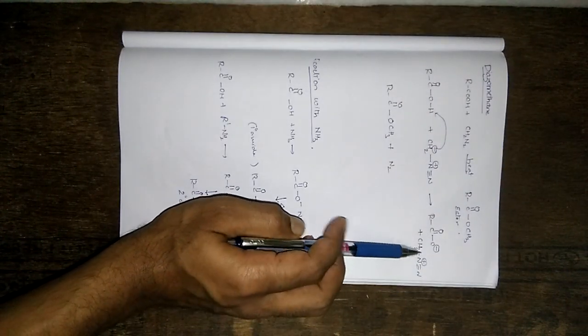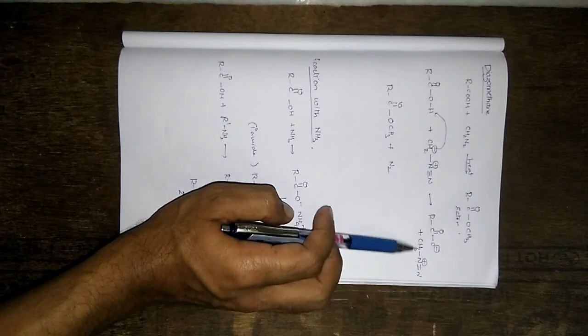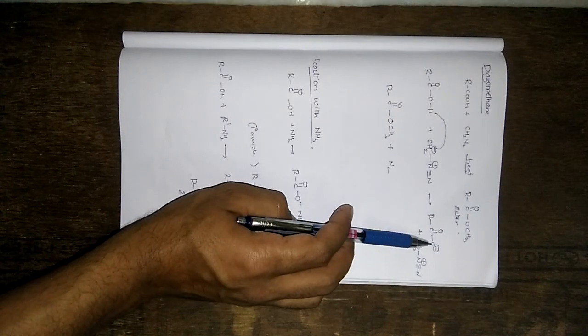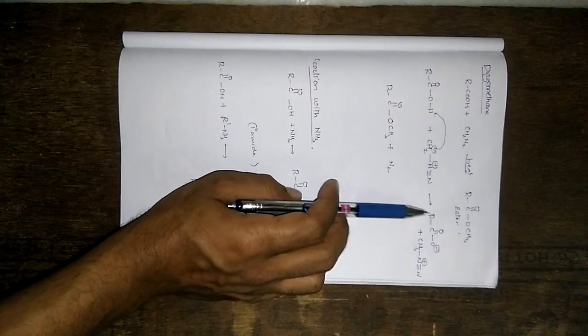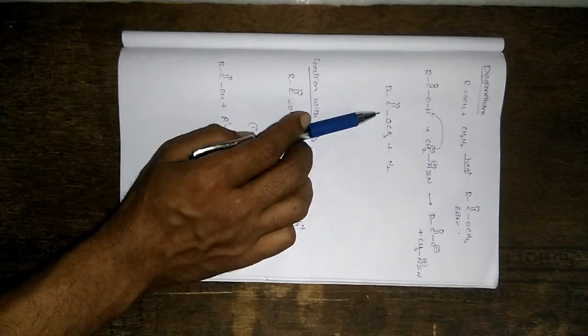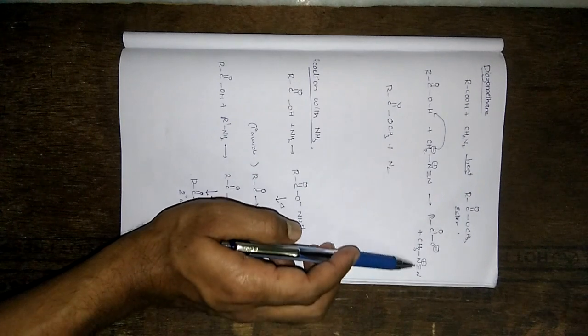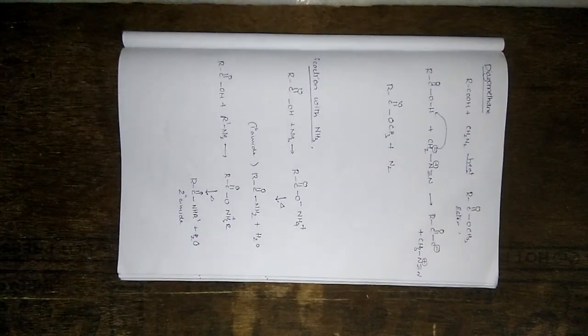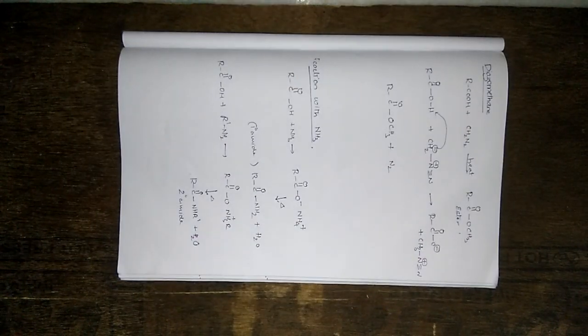When this group reacts with the carboxylate anion — O minus and CH3 — it forms O-CH3 and nitrogen leaves as a good leaving group. The positive charge attacks the negative charge, giving R-C double bond O-CH3. Nitrogen is eliminated, and that's the driving force for the reaction.